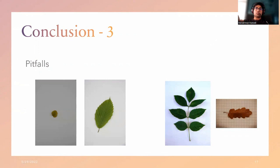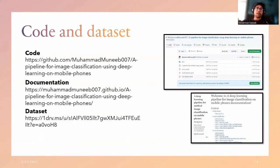There are a few pitfalls and issues with the datasets we considered. For example, two images belonging to the same category may differ in size. There is also an issue with background variation — one image may have a white background while another has an orange background. The code is available on GitHub, the documentation is available on a second link, and the dataset used is also available at the provided link. Thank you for listening.